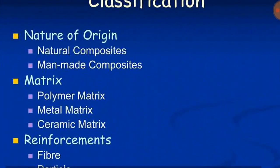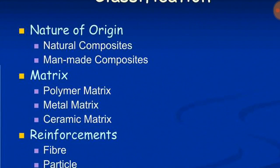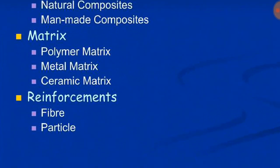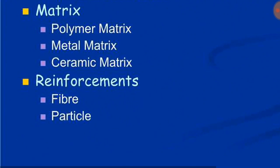Classification: based on the nature of origin, composites are classified into natural composites and man-made composites. Based on matrix type, they are divided into polymer matrix composite, metal matrix composite, and ceramic matrix composite. Based on reinforcement, they are divided into fiber and particle composites.